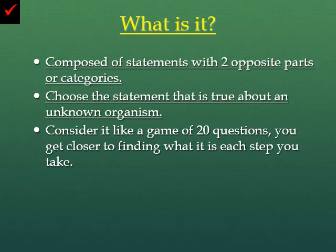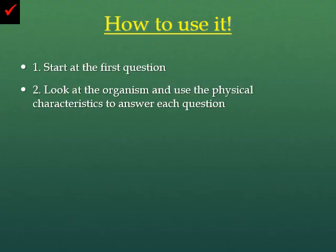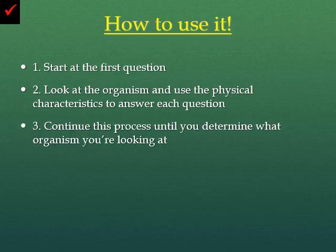So up next, we're going to talk about how to use a dichotomous key. Number one: first start at the very first question. Look at the organism and use the physical characteristics to answer each question as you go. Continue this process until you've determined what organism it is that you're looking at.